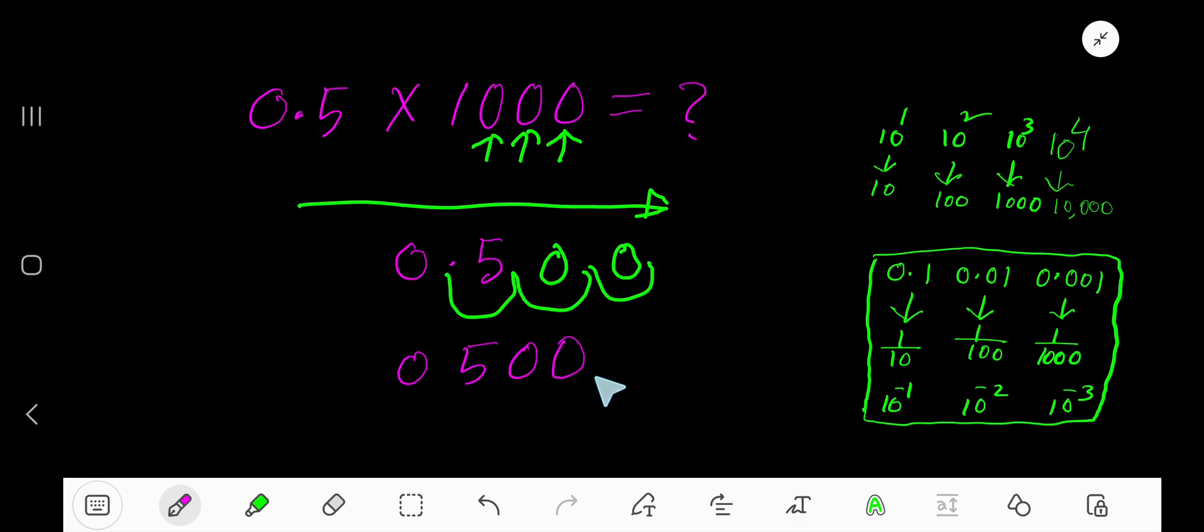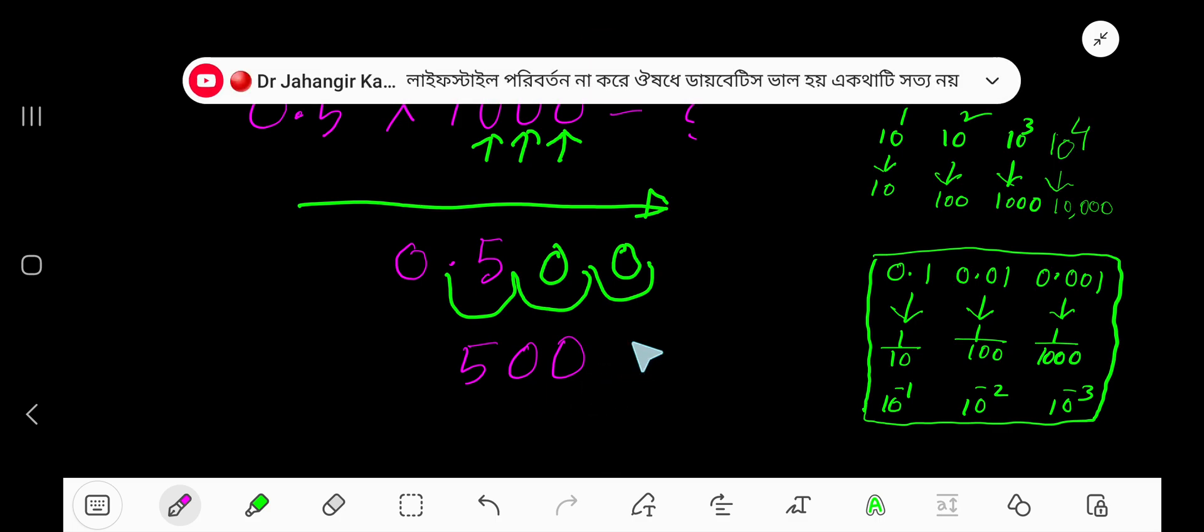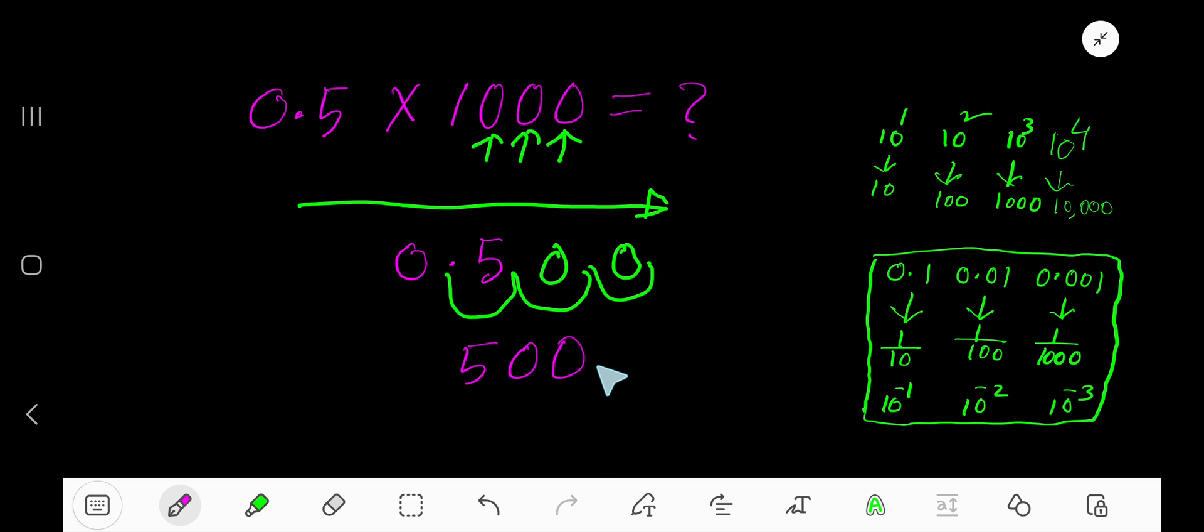So you can omit this 0 and also this decimal. So you are getting actually 500 as your answer.